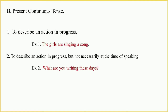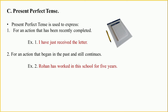Now we'll know about the present continuous tense. Present continuous tense is used to describe an action in progress or the continuity of the action in present time. For example: 'The girls are singing a song' — the action of singing is in progress at the time of speaking. It also describes an action in progress but not necessarily at the time of speaking, such as: 'What are you writing these days?' — here, the work of writing is not in progress at the time of speaking.